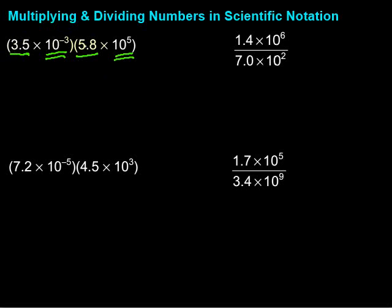Let's take 3.5 times 5.8. If we do that, we get 20.3. Then we have times 10 to the... well we're multiplying 10 to the negative third times 10 to the fifth. What do I do with the exponents?